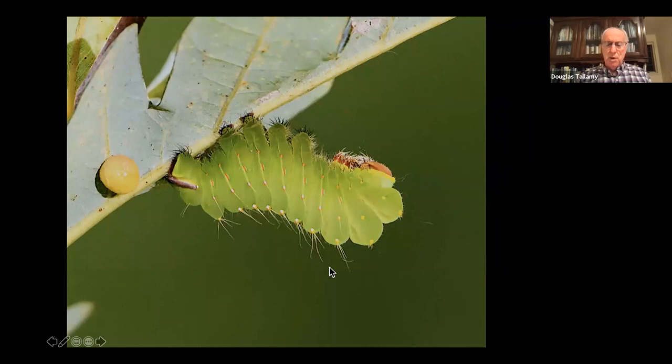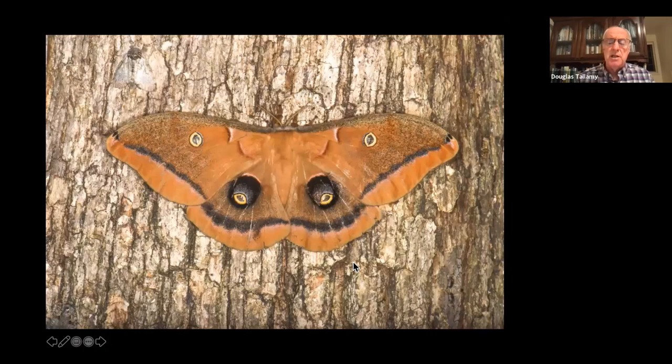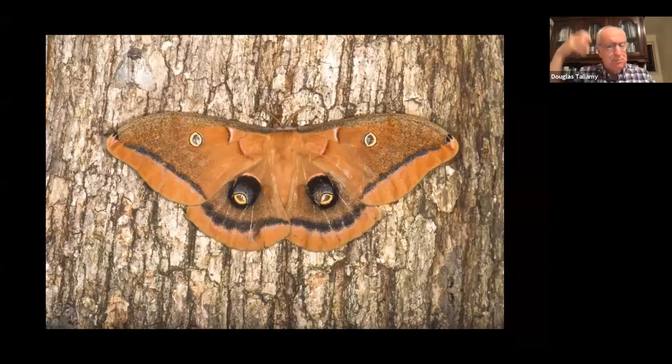The caterpillar looks like a big sausage — one of the favorite foods of cardinals. The adult is the second largest of our giant silk moths, and in most parts of the country they are declining, partly because they're attracted to our lights at night and get picked up by bats and other predators. So turn off your lights at night — you might have some Polyphemus moths.